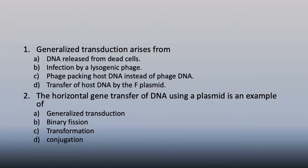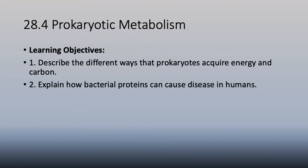Review questions: Generalized transduction arises from accidentally packing host DNA instead of phage DNA - answer C - so you get all of the genome rather than just parts of it. Horizontal gene transfer of DNA using a plasmid is an example of conjugation.